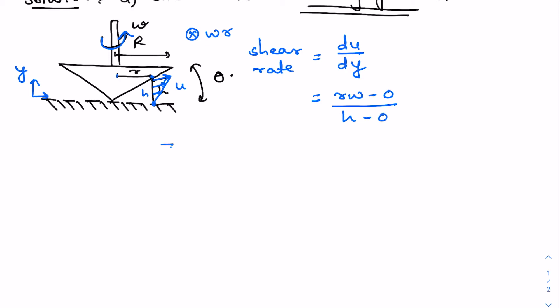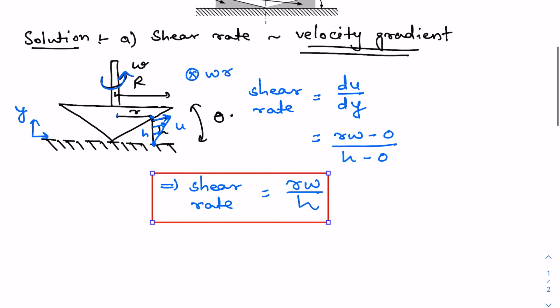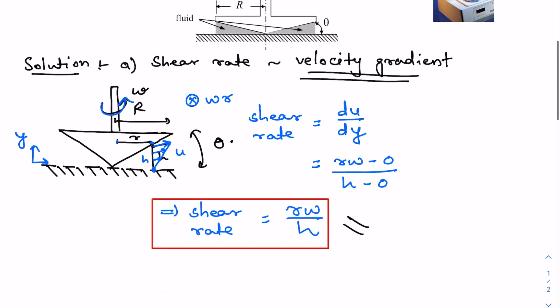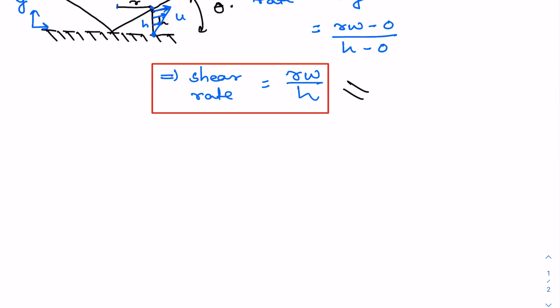So shear rate equals r·omega / h. In the figure we are given the radius and angle theta but not the height h. We can relate h to theta and the radial position r using basic trigonometry: tan(theta) = h/r, so h = r·tan(theta).